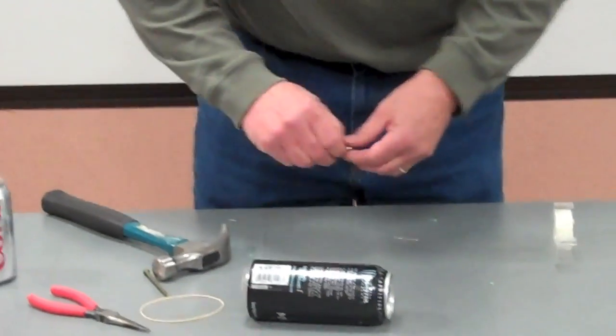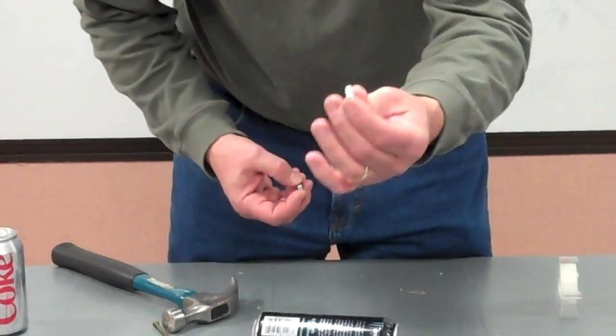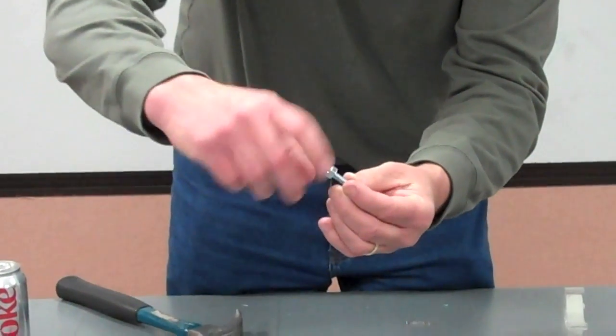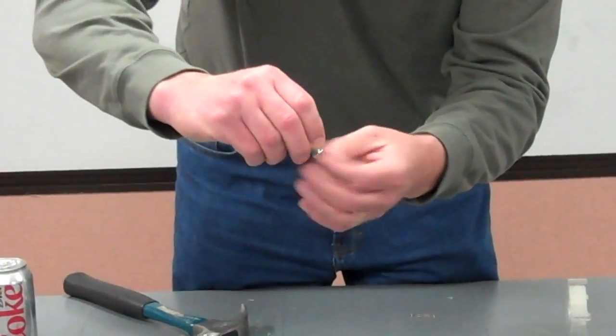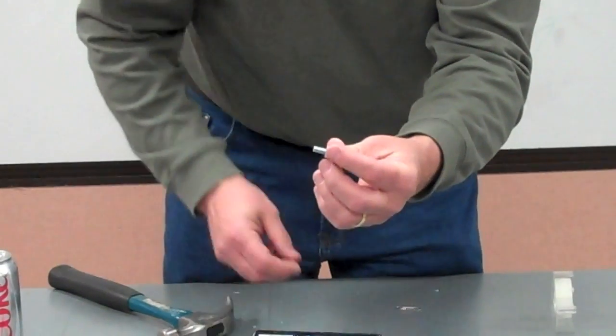Next, you're going to take your nuts and bolts, and this is going to be the weight to help torque up your rubber band inside the can. So, what I'm going to do is put on a couple of nuts. In this case, you can use almost any size nut and bolt, but the smaller,